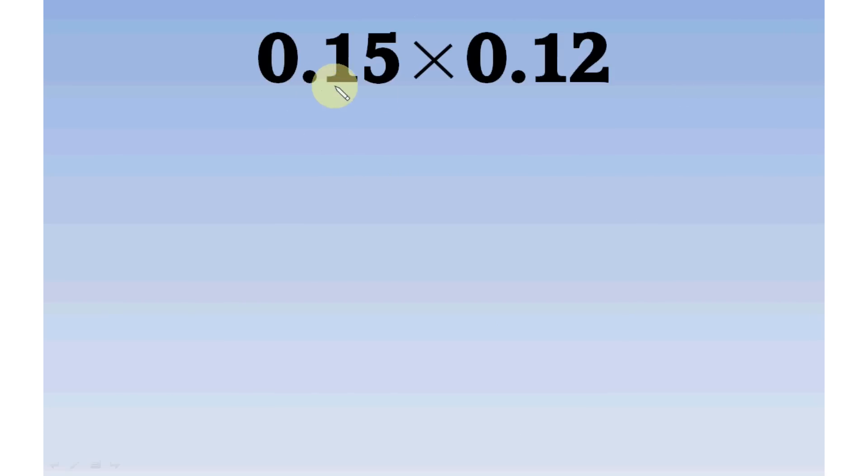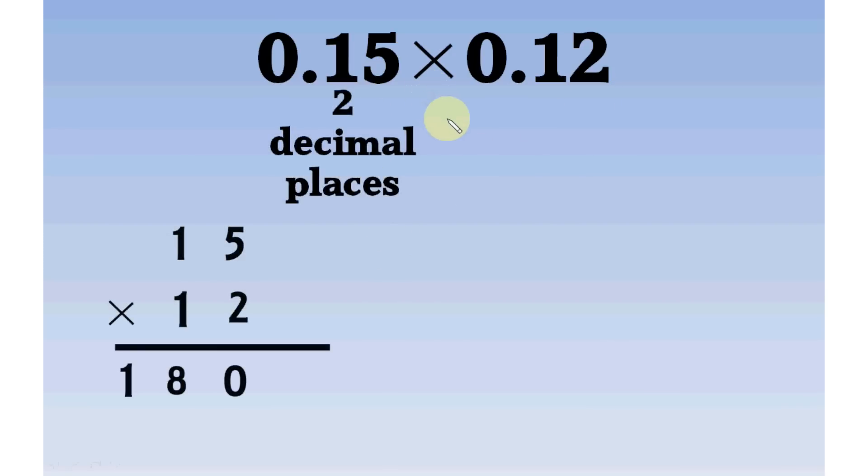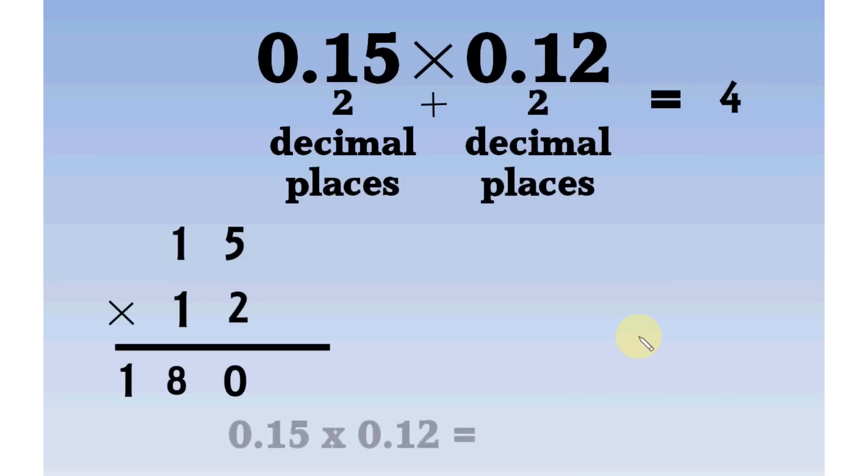Here are few problems you may face while doing this. 0.15 multiplied by 0.12. 15 multiplied by 12 is 180. 2 decimal places in 0.15, 2 decimal places in 0.12. So, there would be 4 decimal places in the product. But we have only 3 digits. We add 0 before it to increase digits. Now there are 4 digits. So, the answer would be 0.0180.